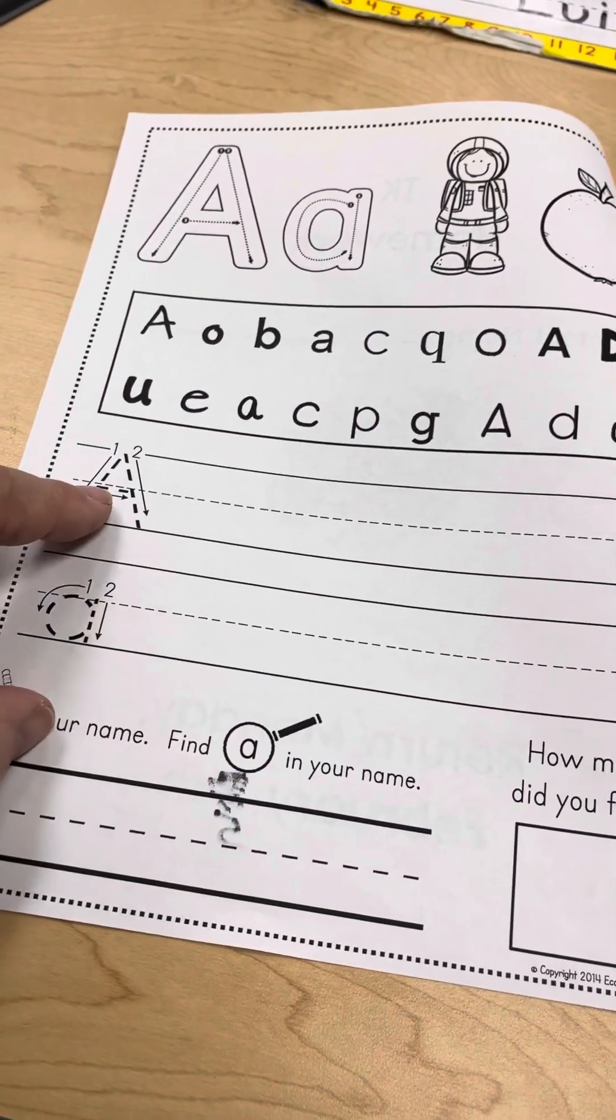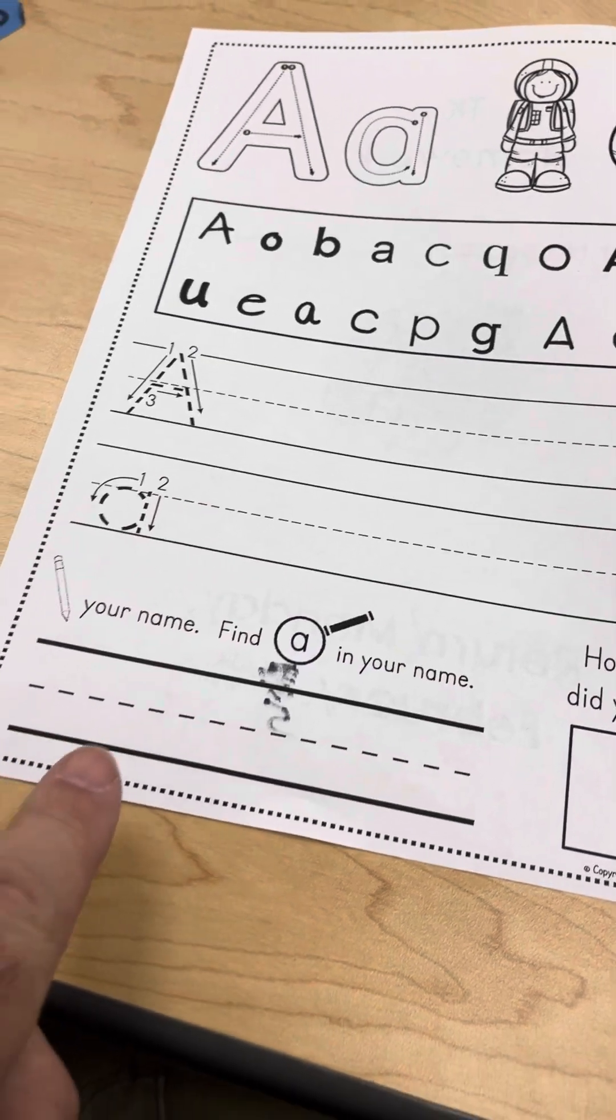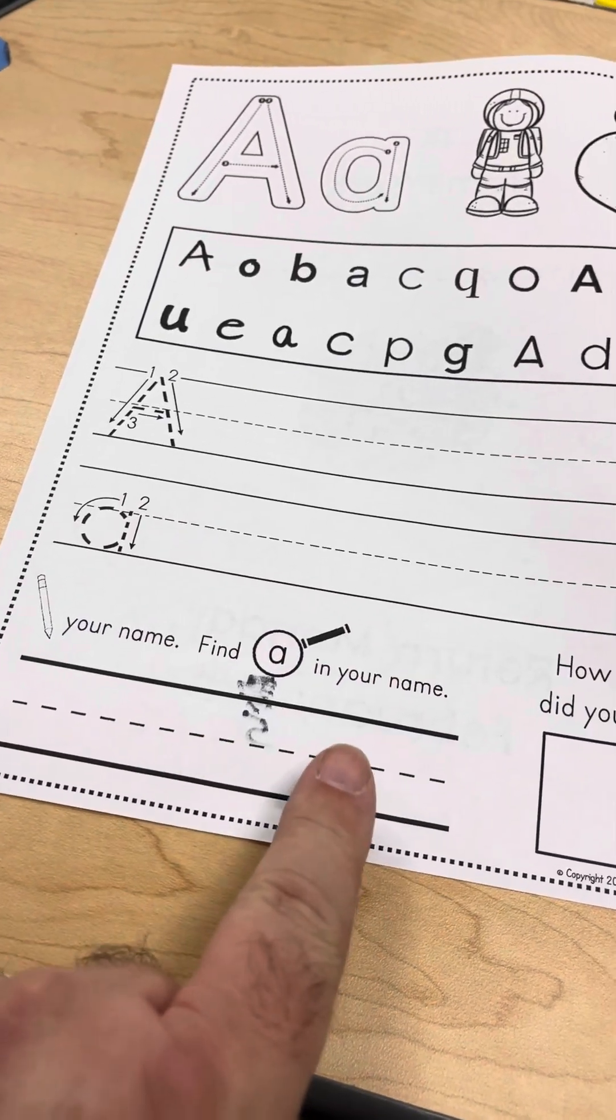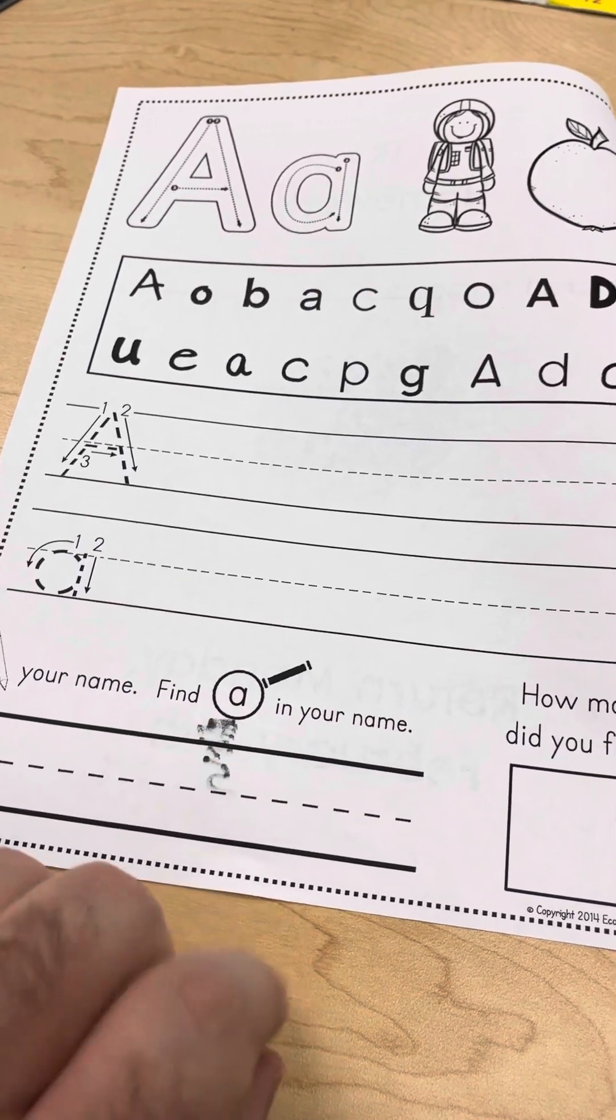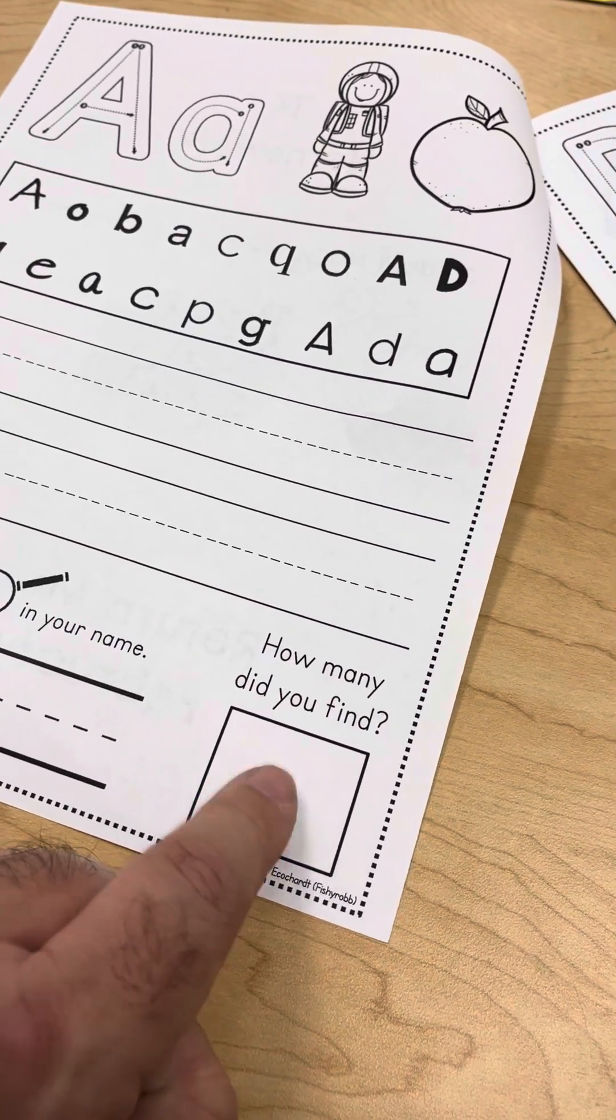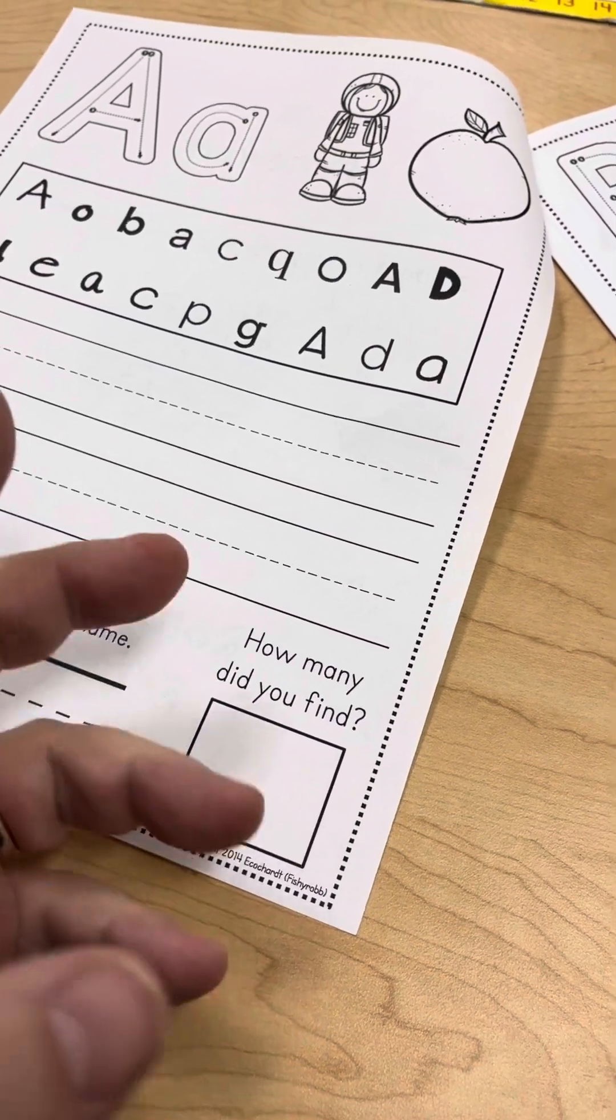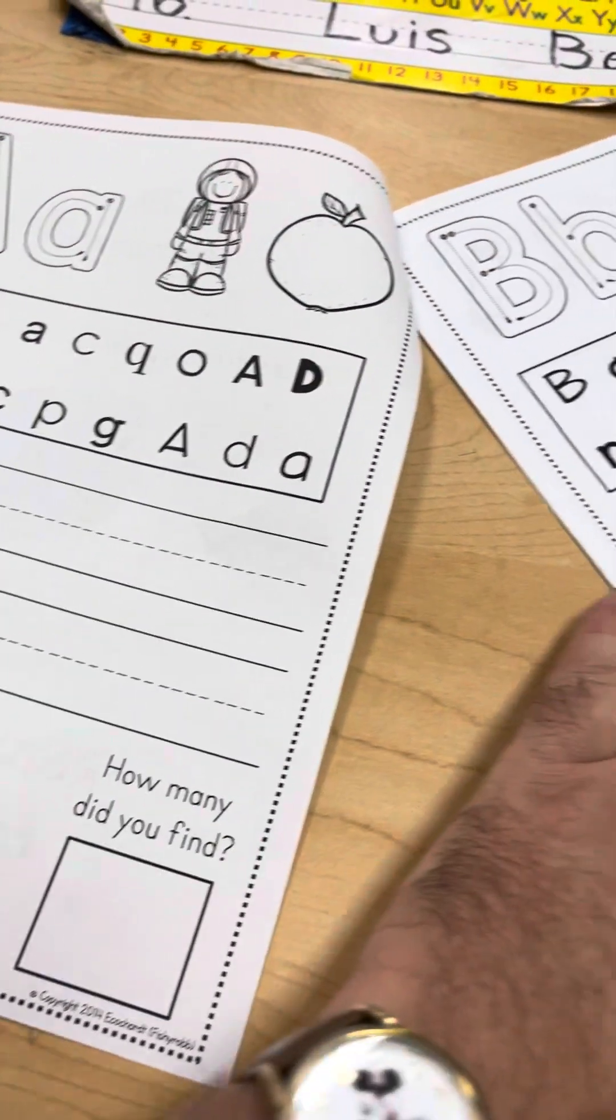They're going to trace the A's and then write some on their own. Here they're going to write their name and then circle any A's they find in their name. And they're going to write the number of how many A's they find in their name there. Maybe it'll be zero, maybe it'll be one or two.